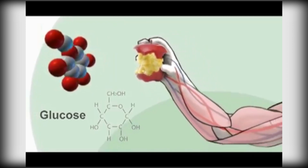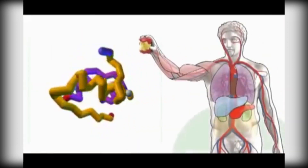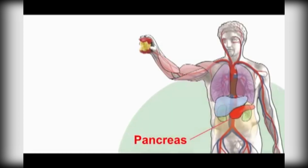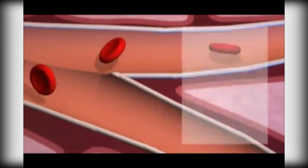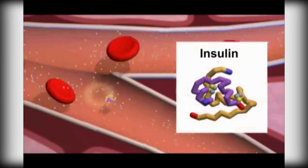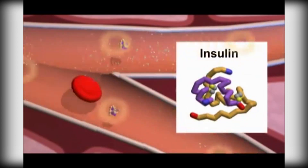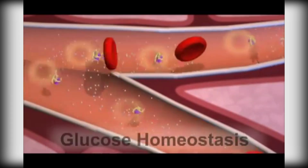When glucose is absorbed by the bloodstream, the blood sugar level gets increased. Now let's discuss how the rise in blood sugar level is regulated by the insulin hormone. The increased concentration of blood glucose stimulates the pancreas to release insulin into the bloodstream. The released insulin regulates the blood glucose level by a process called glucose homeostasis.